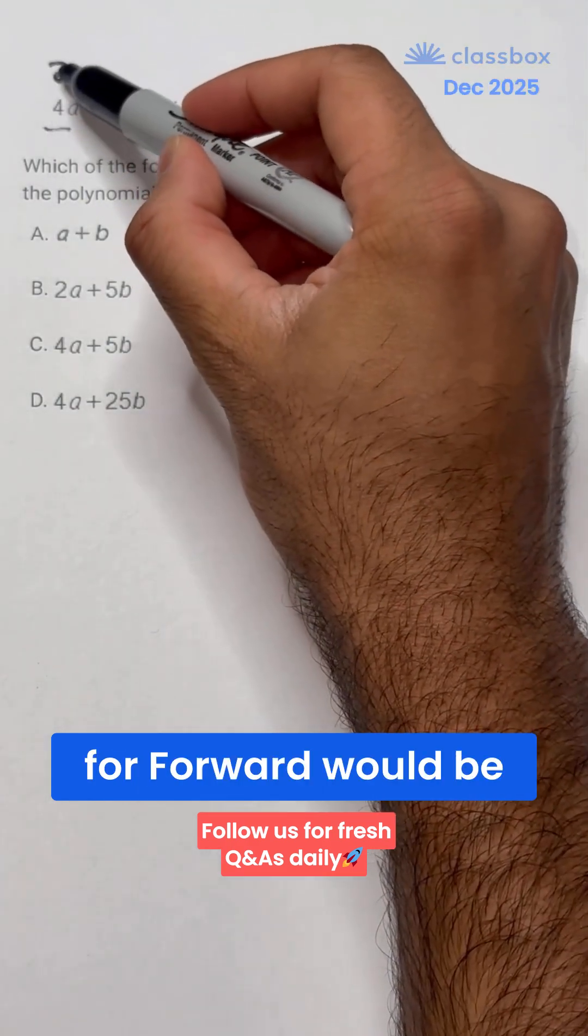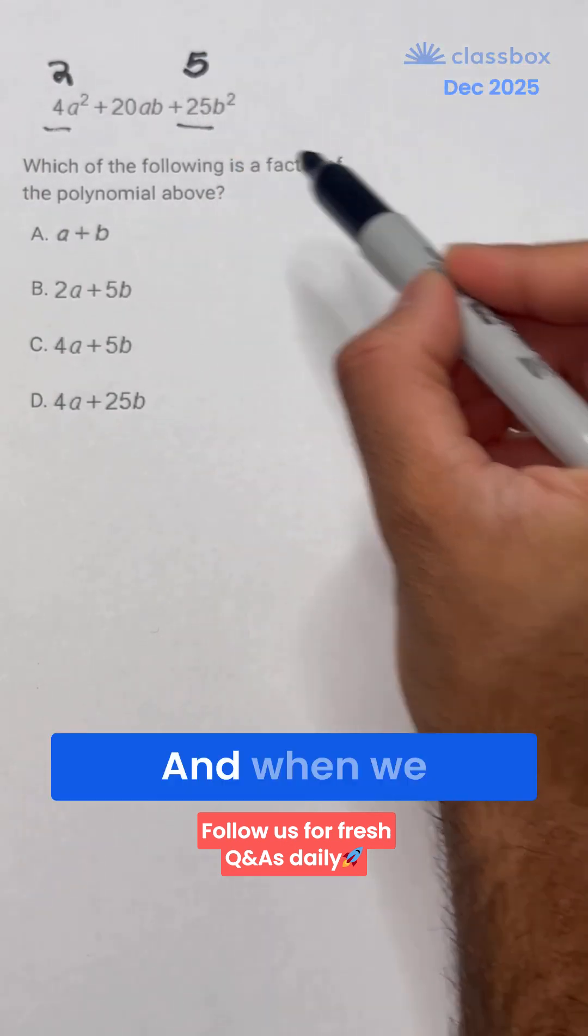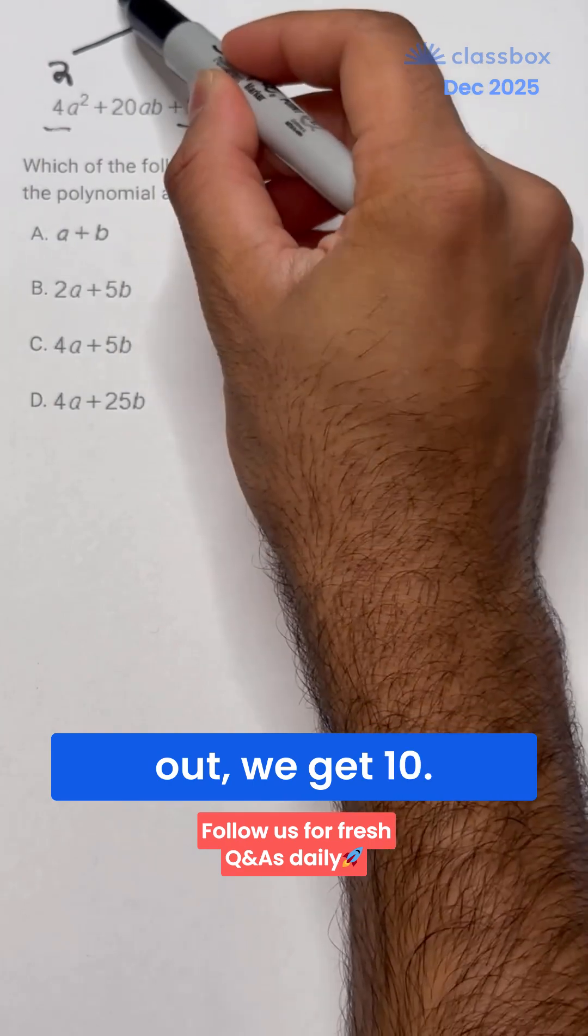The perfect square for 4 would be 2, and the perfect square for 25 would be 5. And when we multiply these out, we get 10.